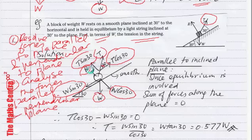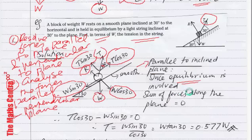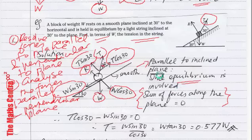Now we have got all the forces indicated. Let's look at our solution. First, we deal with forces parallel to the inclined plane. We are dealing with equilibrium, therefore the sum of forces along the plane must be equal to 0. Since equilibrium is involved, the sum of forces in any direction is 0.